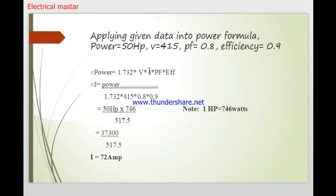Now, let's solve for current I. Rearranging the formula: I = Power ÷ (√3 × 1.732 × 415 × Power Factor 0.8 × Efficiency 0.9). We insert the value: 50 HP × 746 = 37,300 W, since 1 HP equals 746 W. So 50 HP into 746 gives us the numerator, which is then divided by the denominator values to give the full load current.